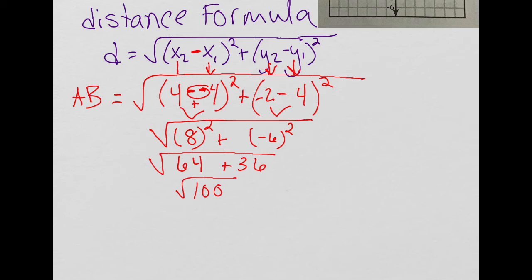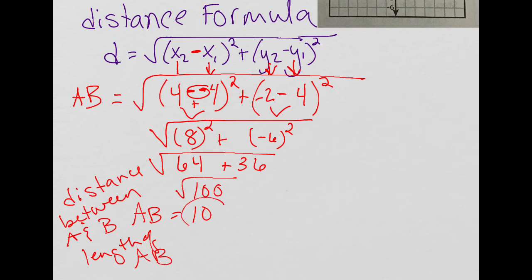Now I'm ready to add them. 64 plus 36 is 100. And the square root of 100 is 10. So the distance between the endpoints A and B, is the same thing as the length of AB, is 10.